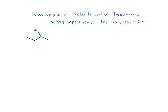We're going to start with 2-chlorobutane, and to 2-chlorobutane we are going to add water. We're adding 2-chlorobutane as one enantiomer, and specifically this would be the S-enantiomer.